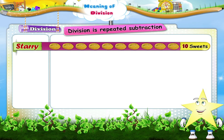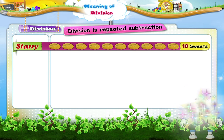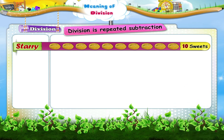Suppose I asked you to give two sweets to each friend. How many groups of two sweets each will you be able to make from these ten sweets? Let us begin.